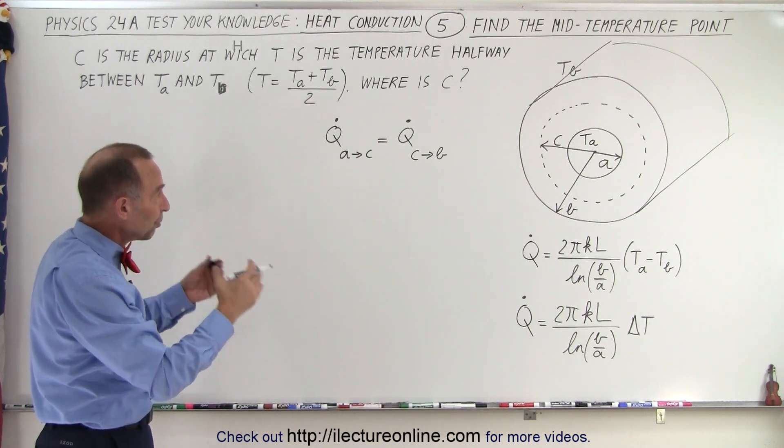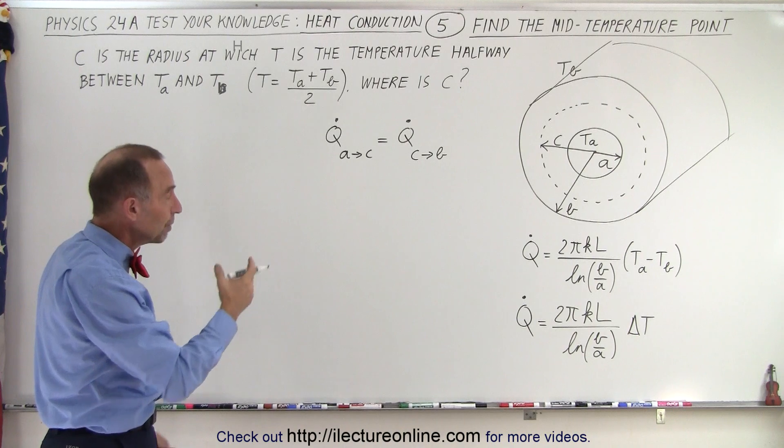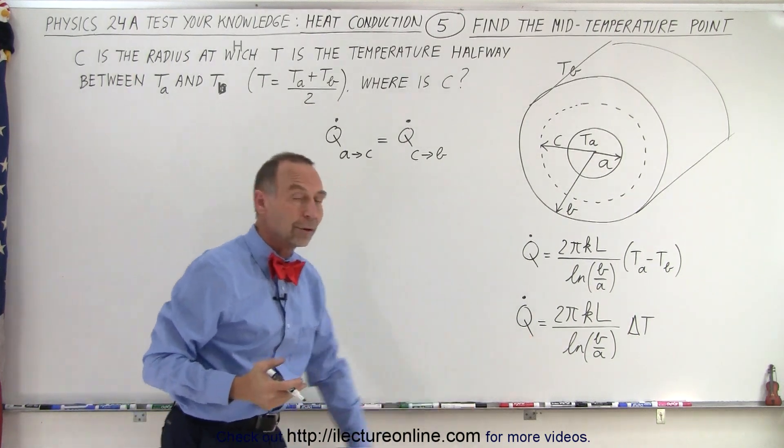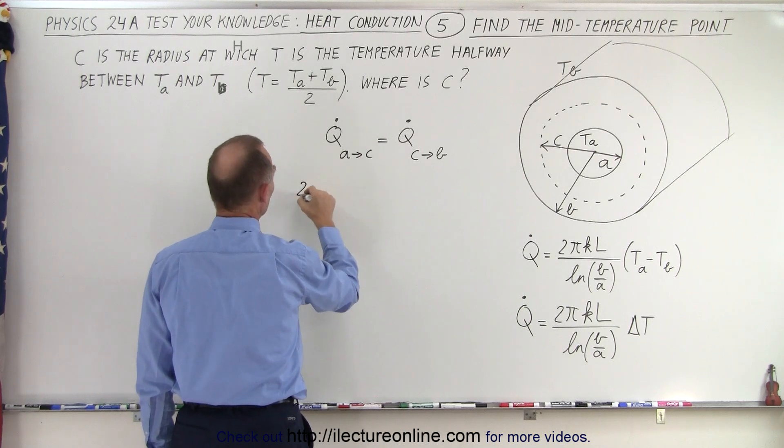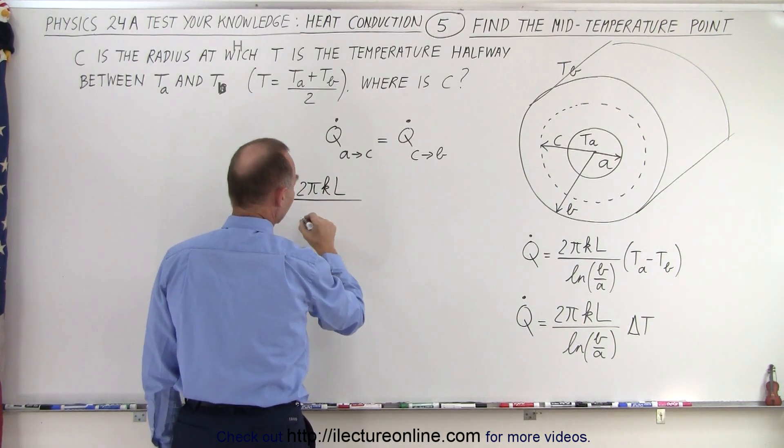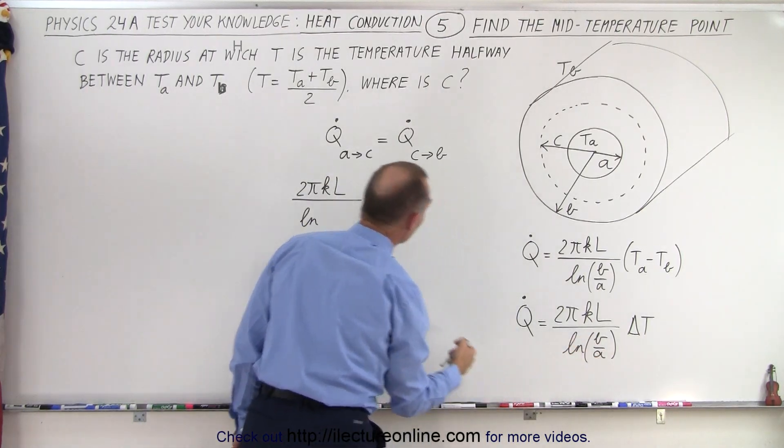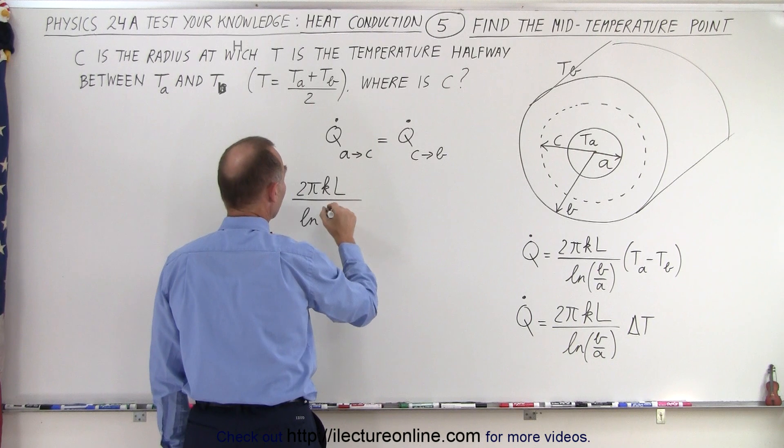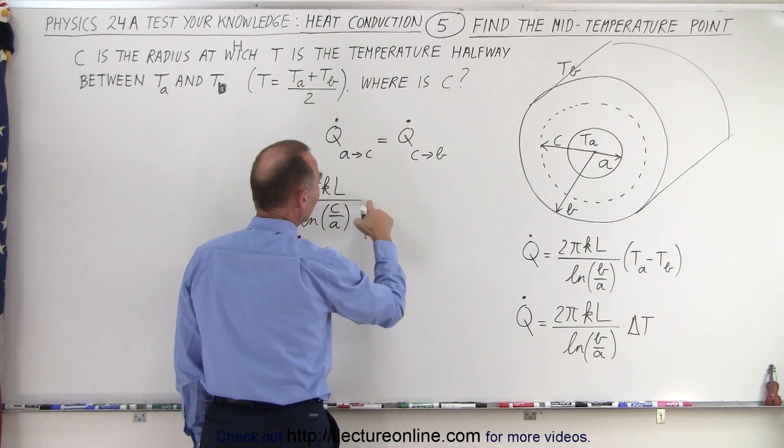So now let's write the expressions for the Q dot going from A to C and the Q dot going from C to B using our equation right here. So the left side is going to be 2πKL, that's the same, divided by the natural log of the larger radius divided by the smaller radius. So in this case it's going to be C over A, because C is larger than A, times the delta T.